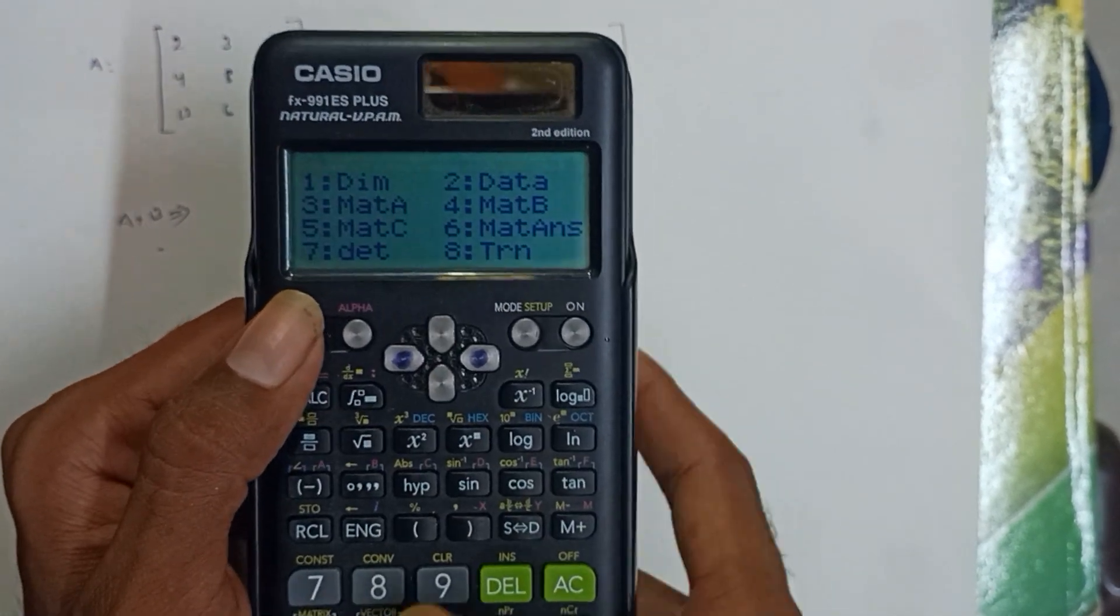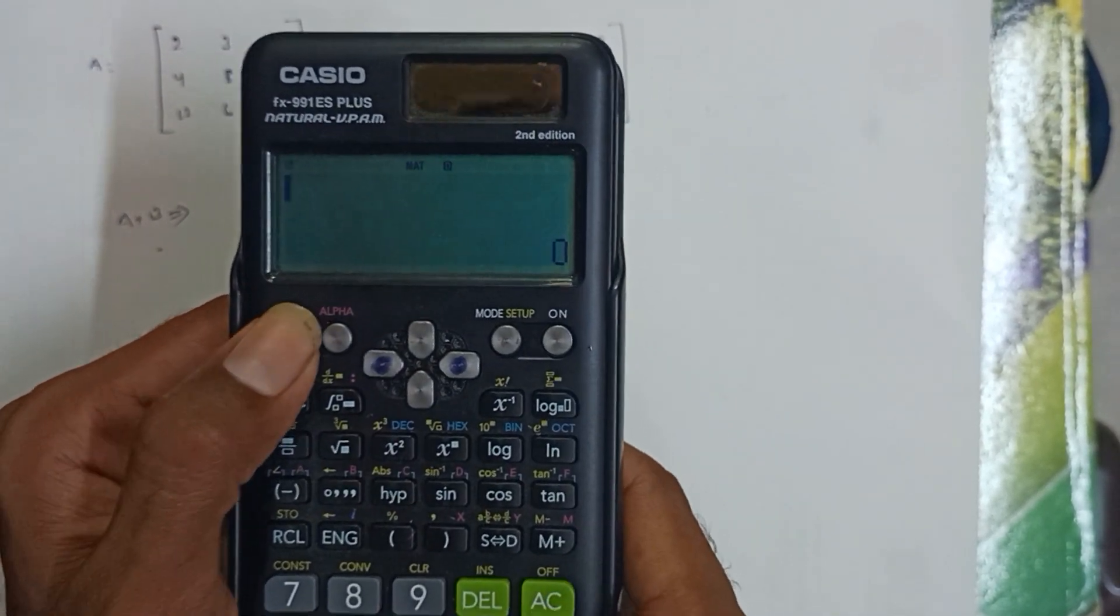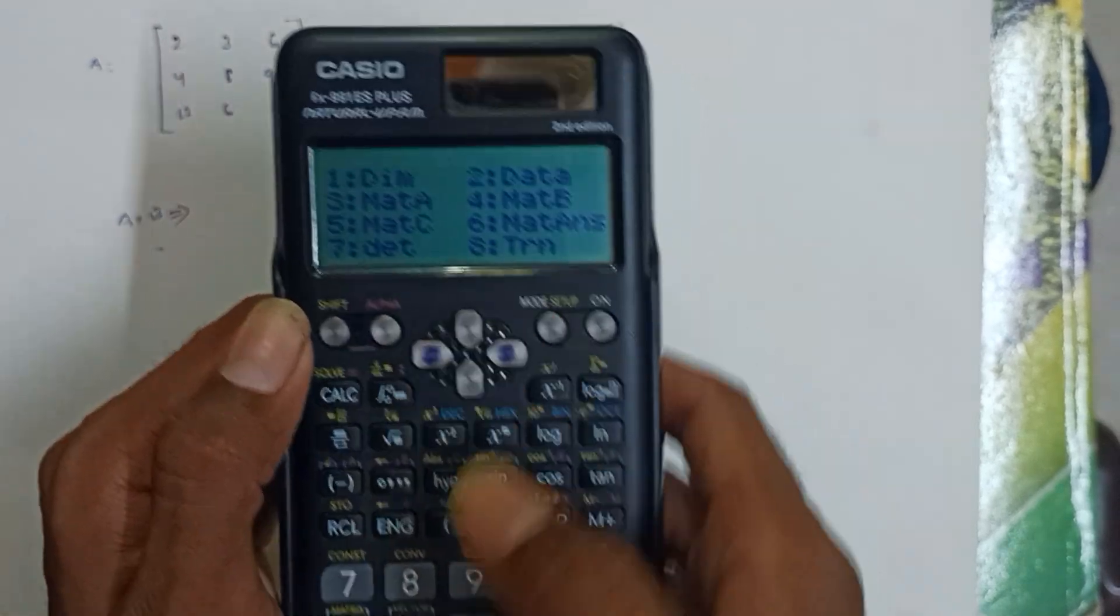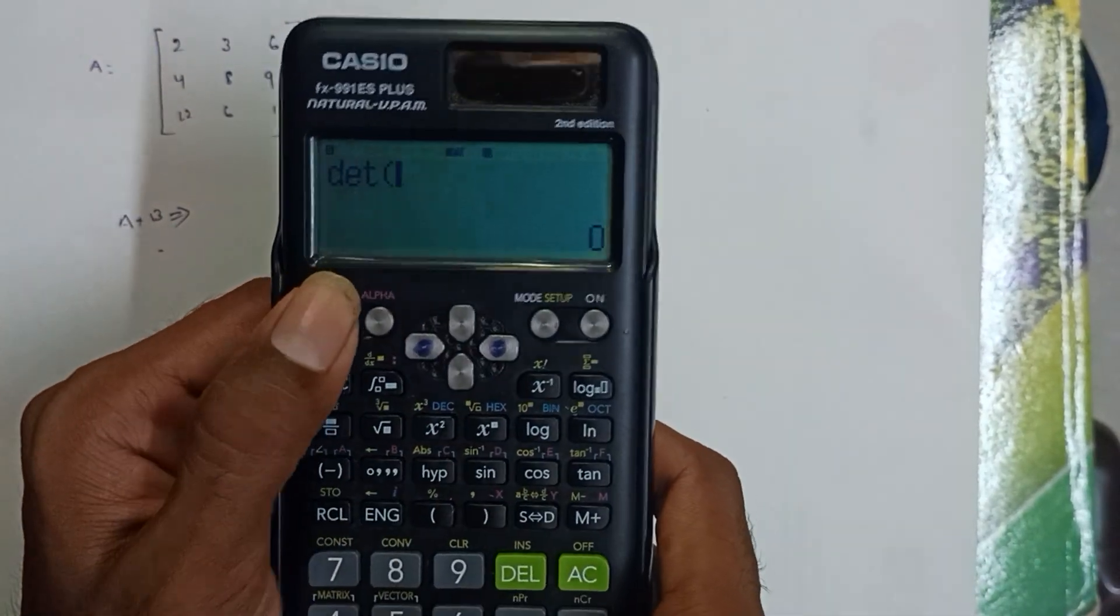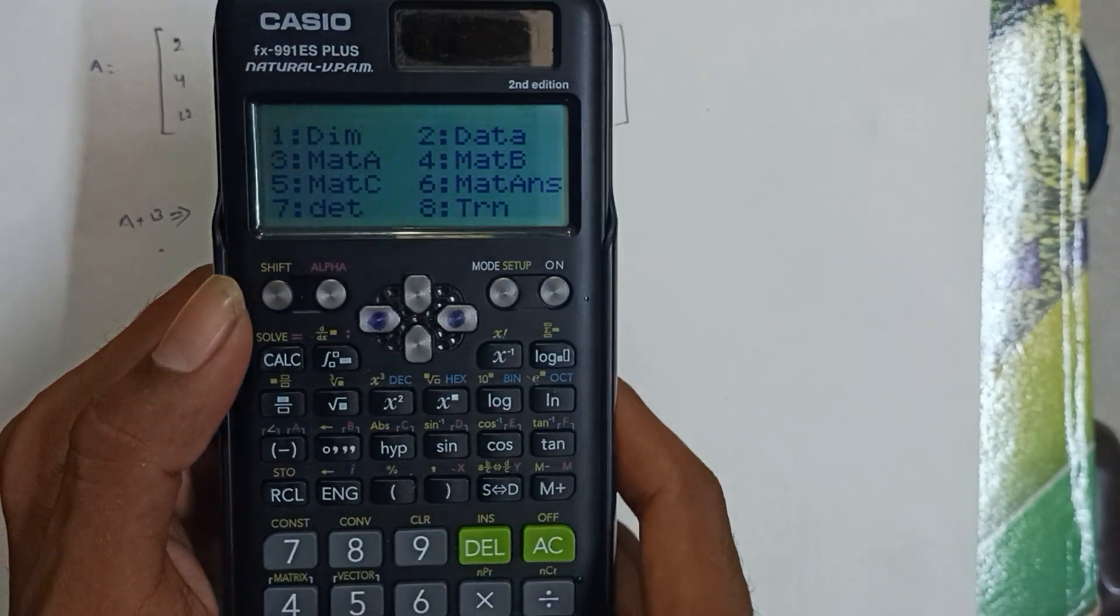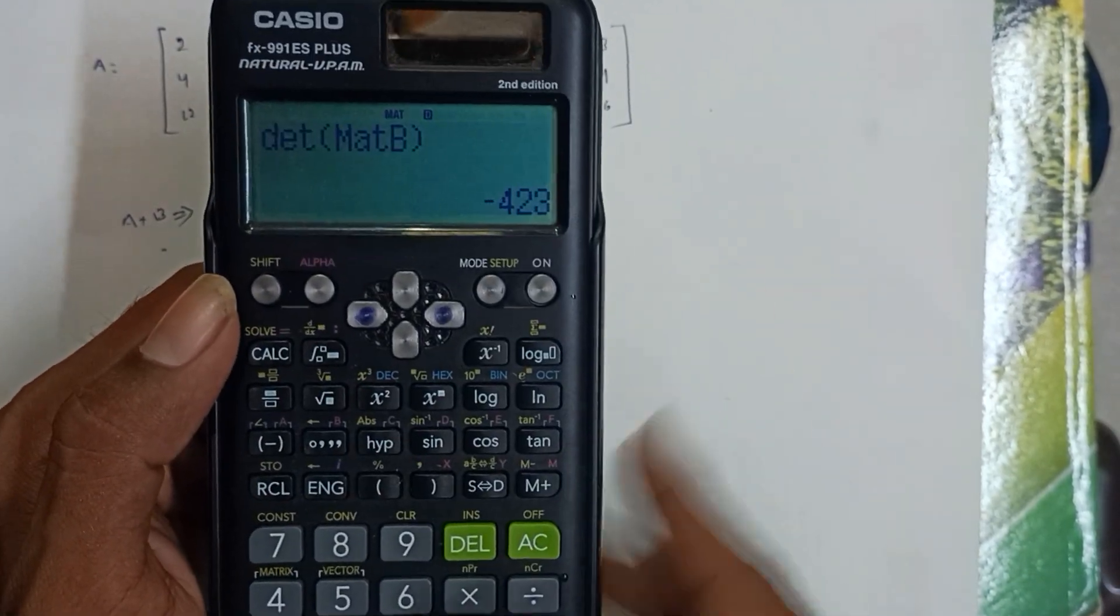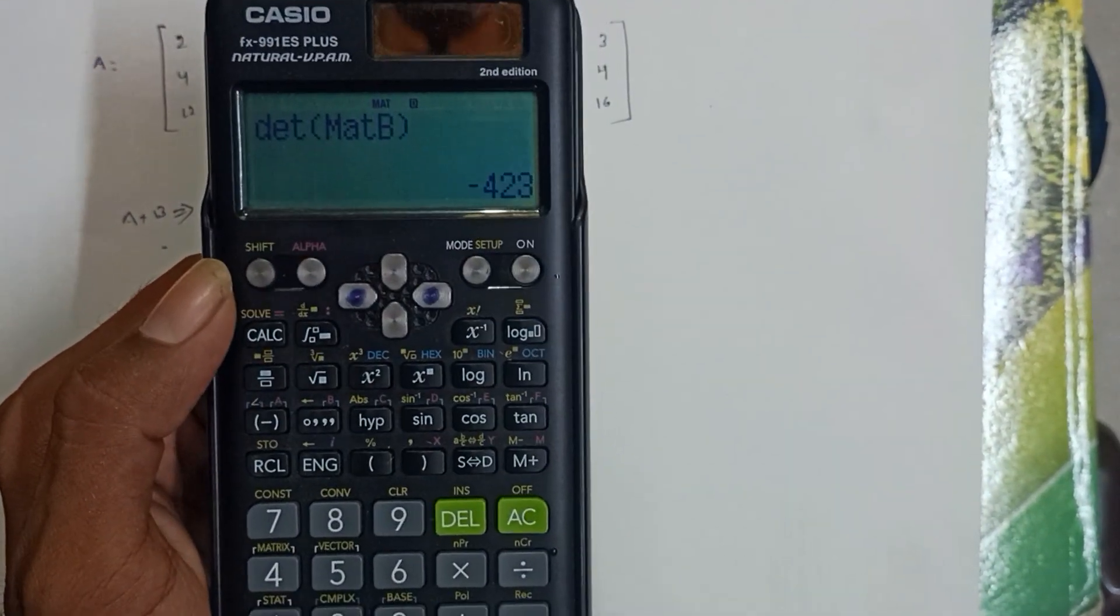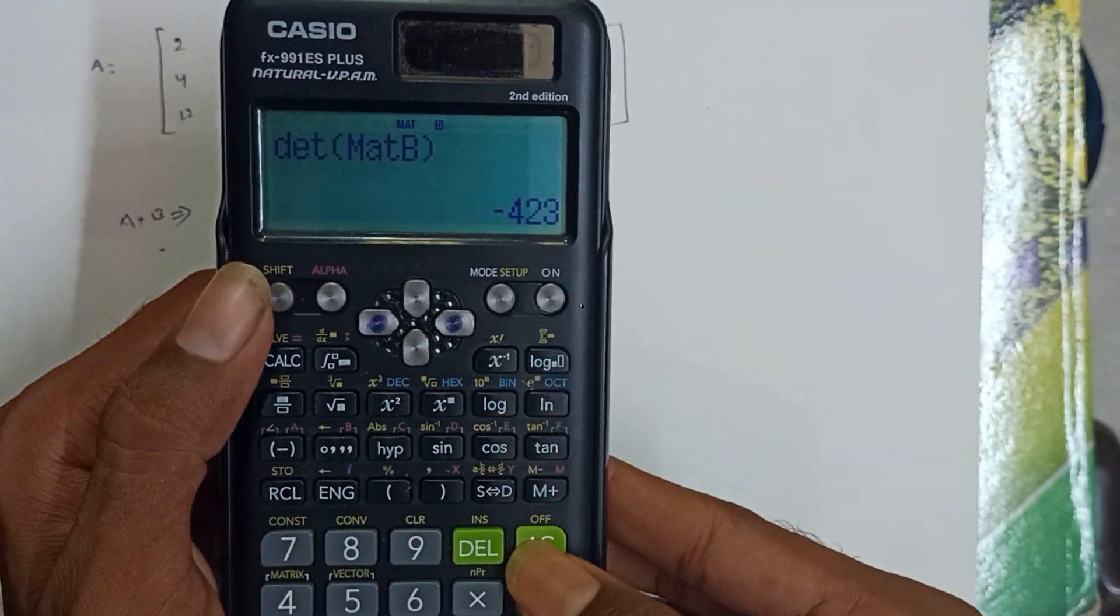Now for the determinant of Matrix B. Press 7 for determinant, Shift plus 4 to access Matrix B. Equal to gives us 23 as the determinant.